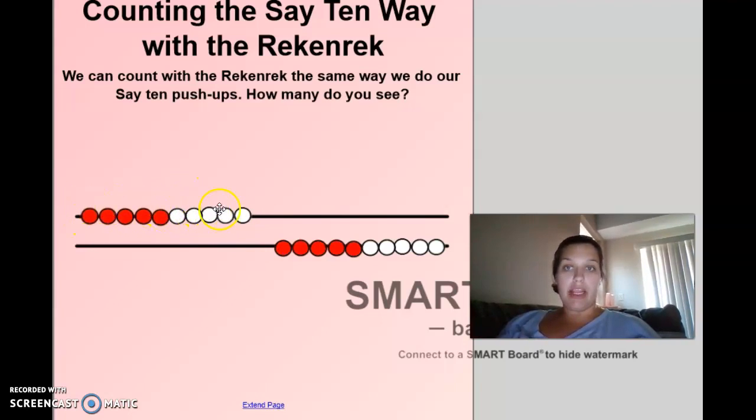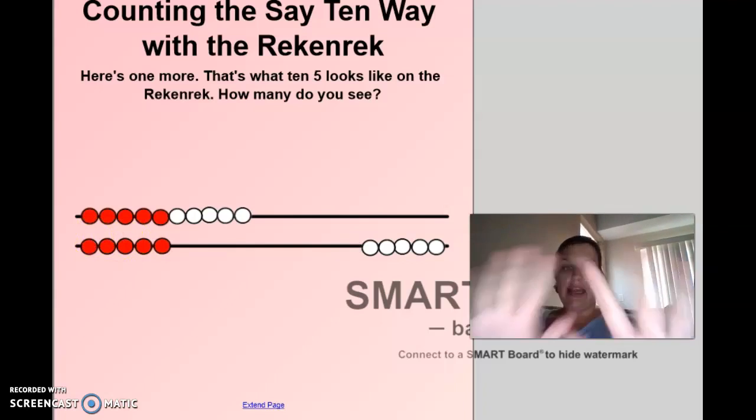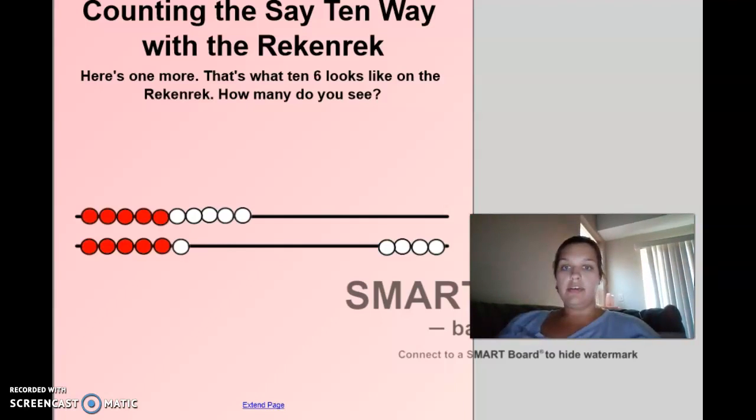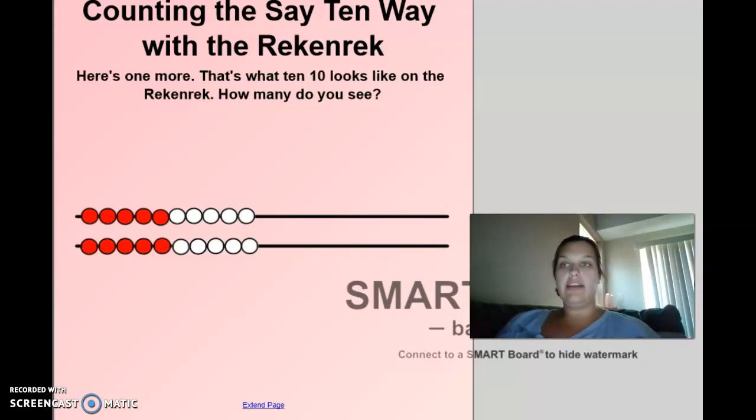So who can remember how many are right here? There are 10. If I move one over, that's 10, 1, right? So what am I showing here? 10, 1. 10, 2. What's this number? 10, 3. 10, 4. Good job. 10, 5. 10, 6. 10, 7. 10, 8. 10, 9. 10, 10. Very good.